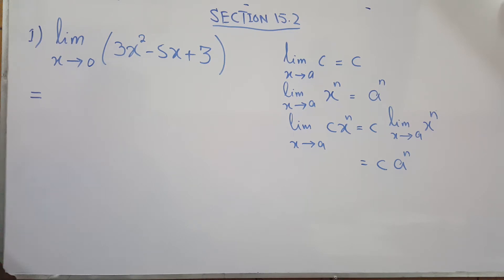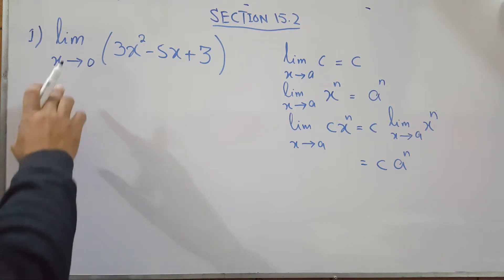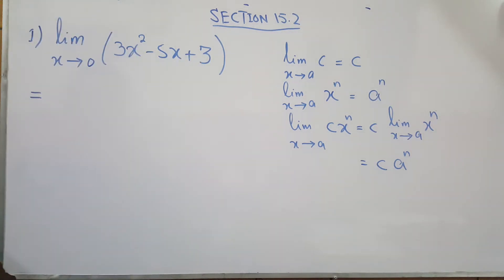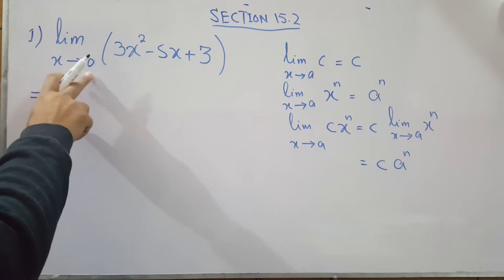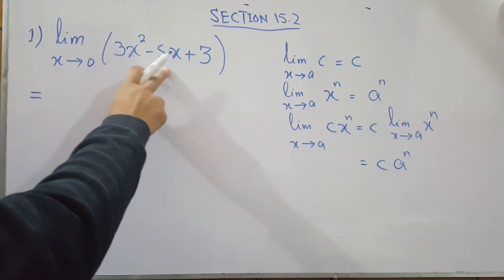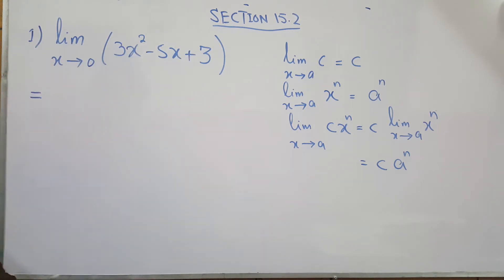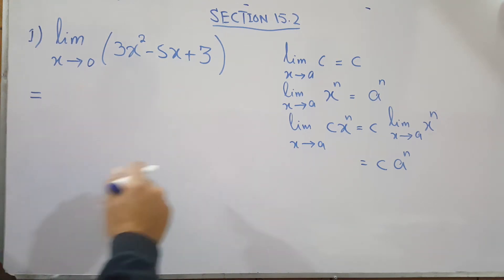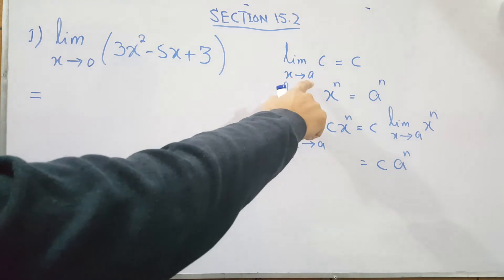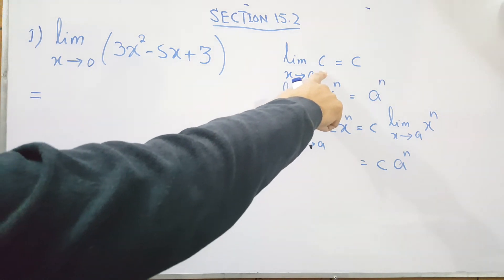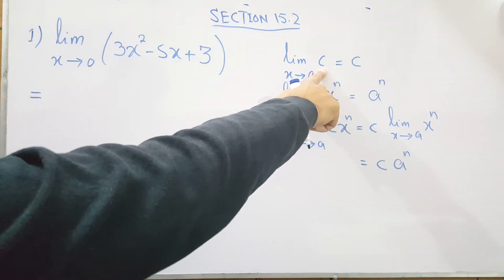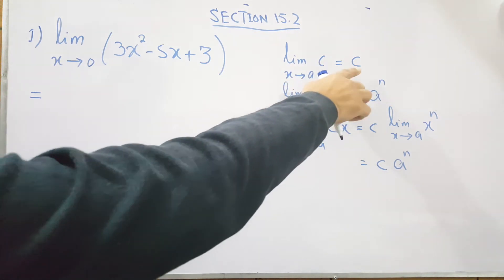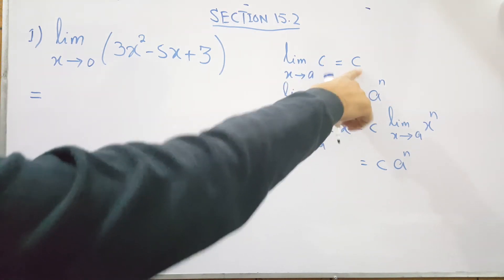In this section we will solve questions that say find the indicated limit. We are given a question that limit x approaches to 0 of 3x squared minus 5x plus 7. To find out the limit, first we have to understand a few rules. The first rule is that if x approaches to some number and you are taking the limit of a constant number, the limit does not apply and you get the exact same constant.